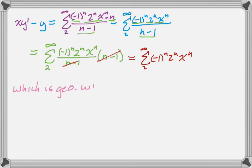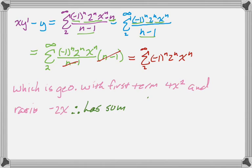So that's a geometric series with a first term. You take n equals 2, and you plug it in, so you get negative 1 squared, which is 1. 2 squared, which is 4x squared. So 4x squared. And then a common ratio of negative 1 times 2 times x, or negative 2x. So we know that that has a sum, which is the first term, over 1 minus the ratio. And we can simplify that. And that's exactly what we were supposed to show this thing equals.